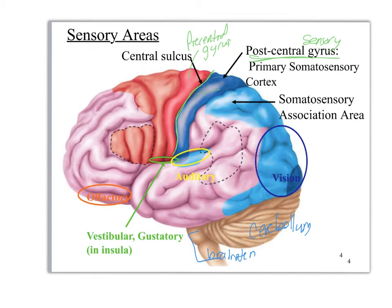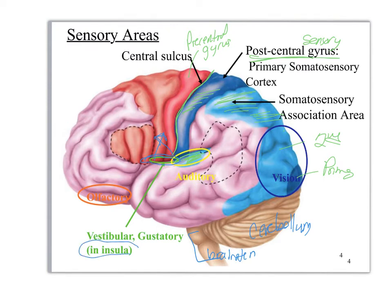Notice what they've done with the postcentral gyrus — they've done it in dark blue, and then the somatosensory association area in light blue. They've highlighted some other sensory areas in blue as well. You have the auditory region right here, and then the visual — this is the primary — and this is a secondary association area for visual information. We have two areas not colored on this view, circled: the vestibular gustatory region, associated with the insula lobe, which you have to lift up to see. And right here at the base of the frontal lobe is a region for collecting olfactory information.